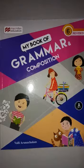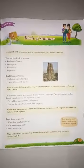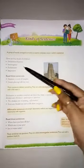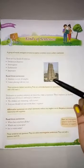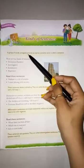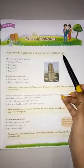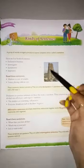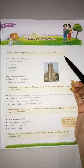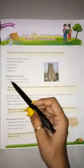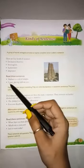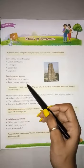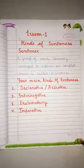Welcome students. Today we will start English Grammar Lesson 1: Kinds of Sentences. Before starting, let me explain what a sentence is. A group of words arranged correctly to express a complete sense is called a sentence. It means when words are arranged in a group in correct order with a complete sense, that is known as a sentence. For example: 'Madurai is a city of temples.' 'I enjoy playing with my dog.' These are examples of sentences.